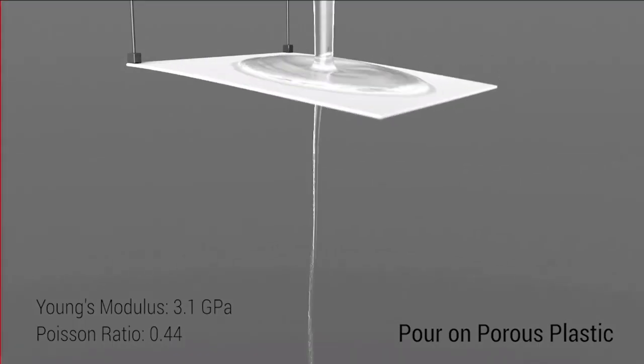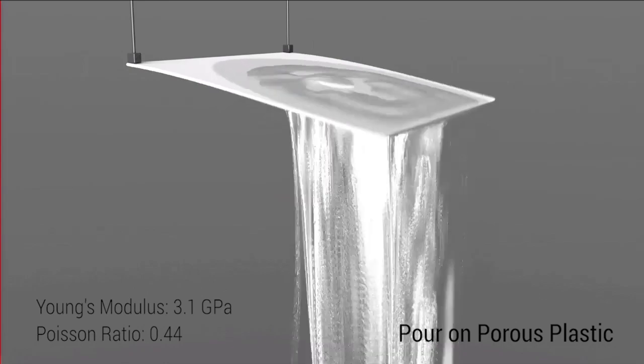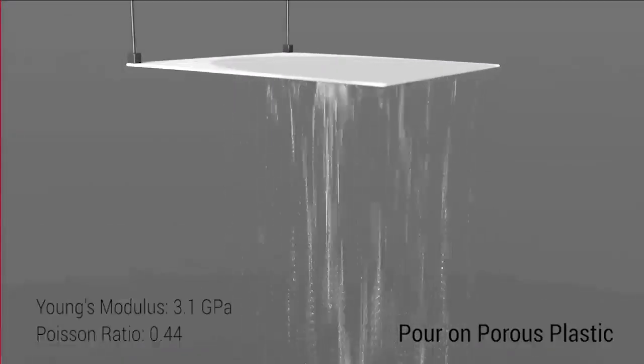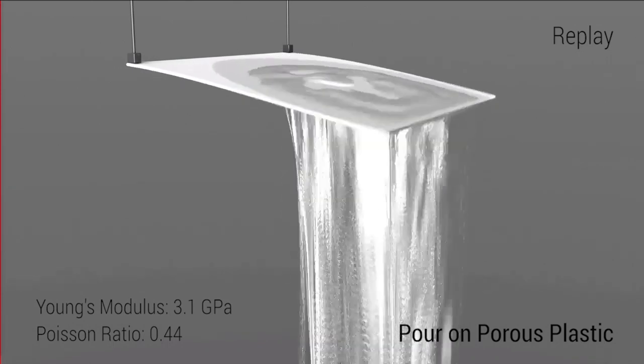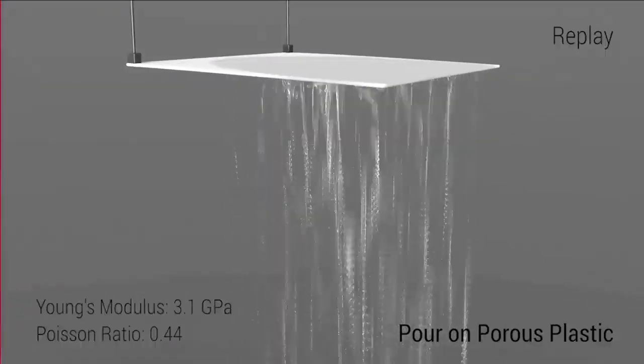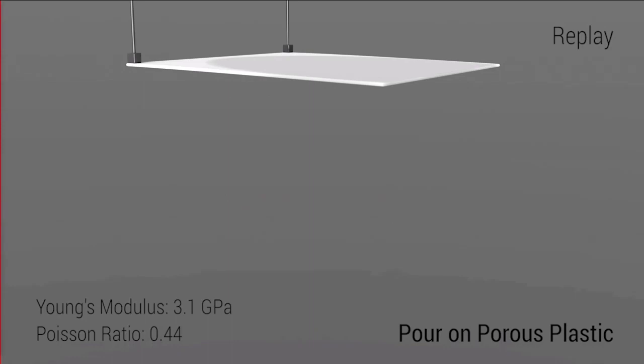More than just soft cloths, our methods are able to handle stiff materials. For example, here we show pouring water on a porous, non-woven plastic sheet that has much higher Young's modulus and higher Poisson ratio.